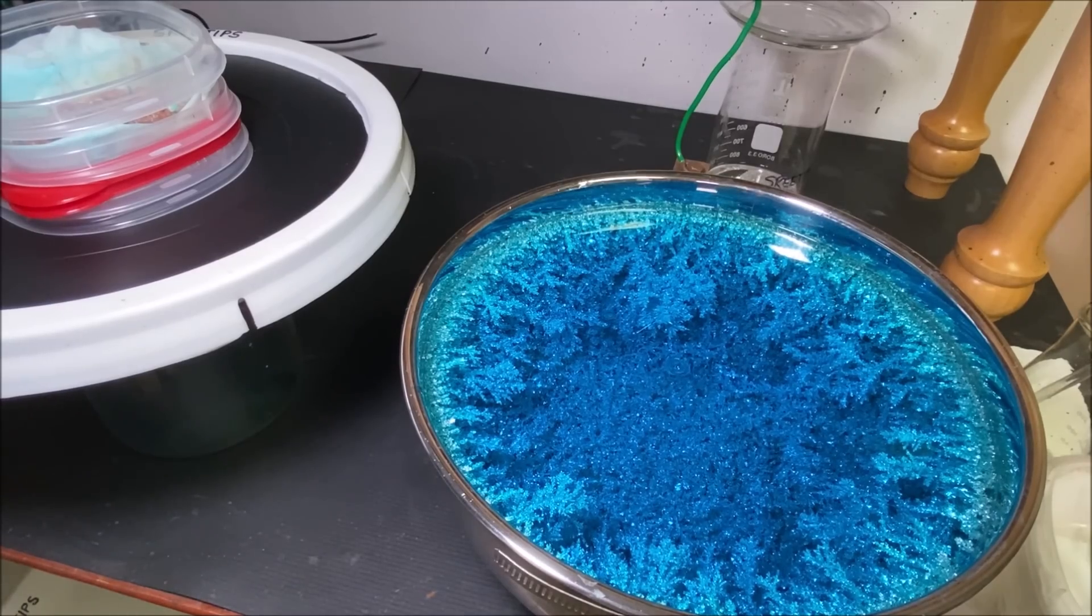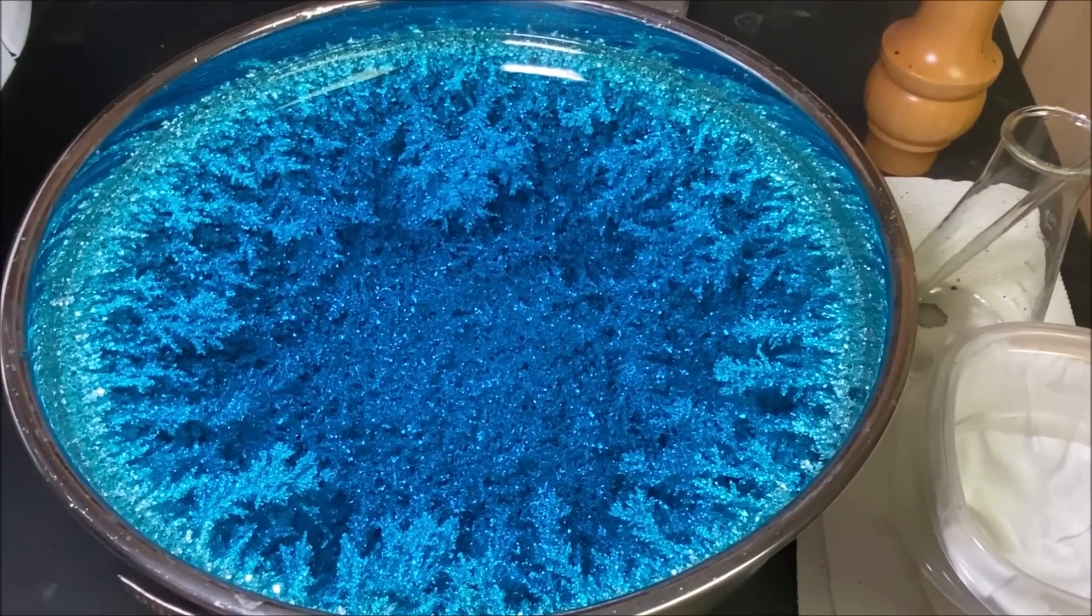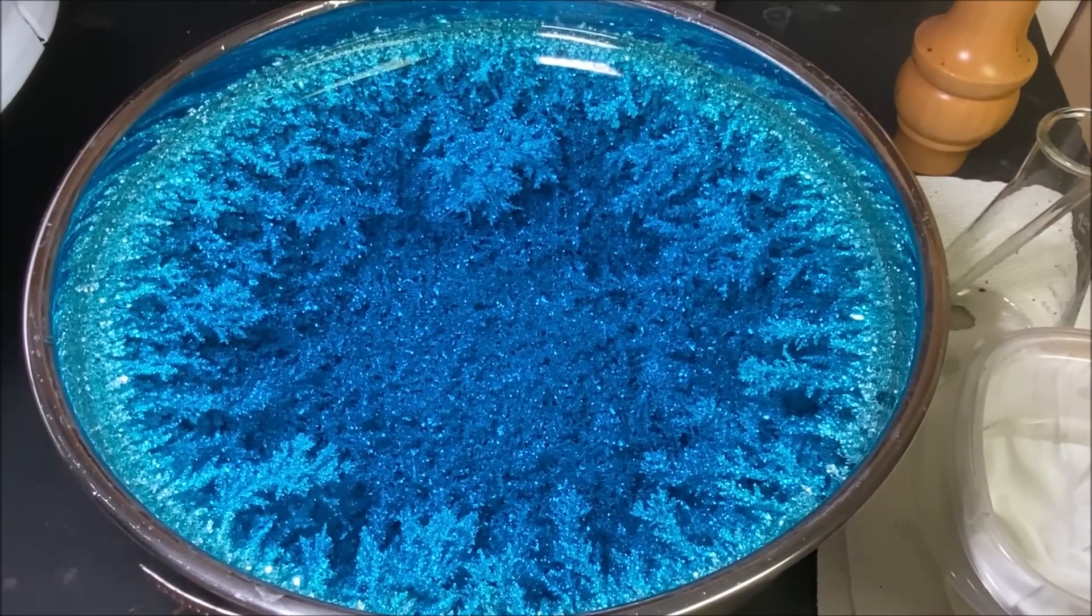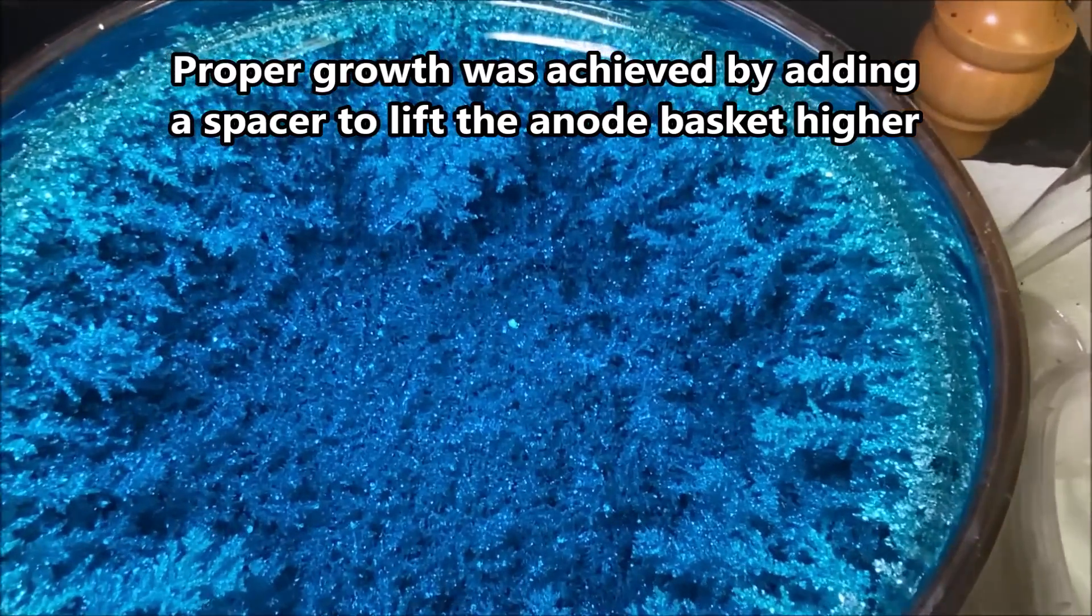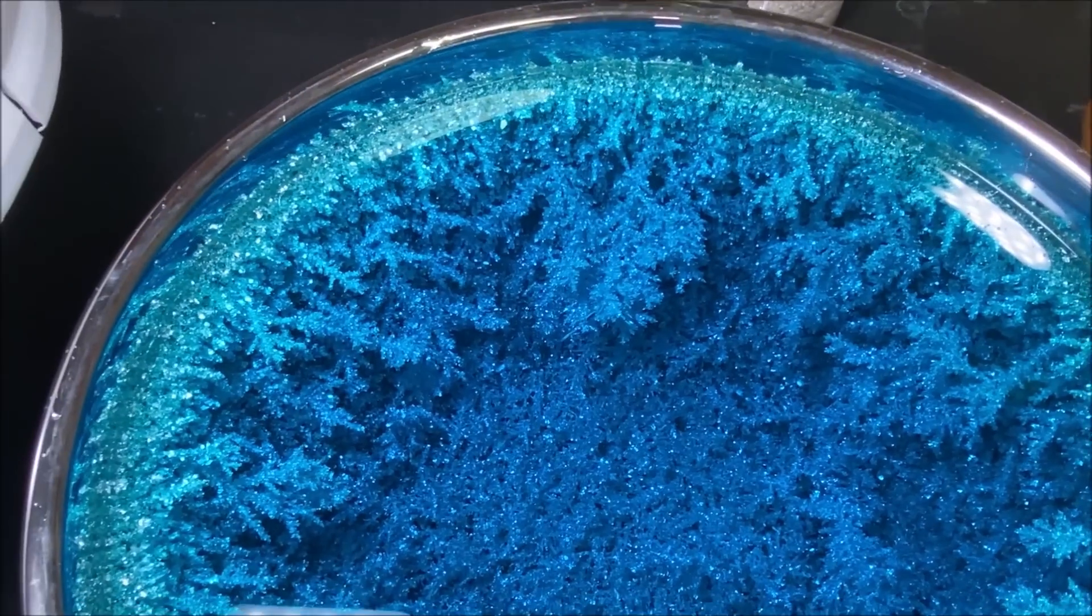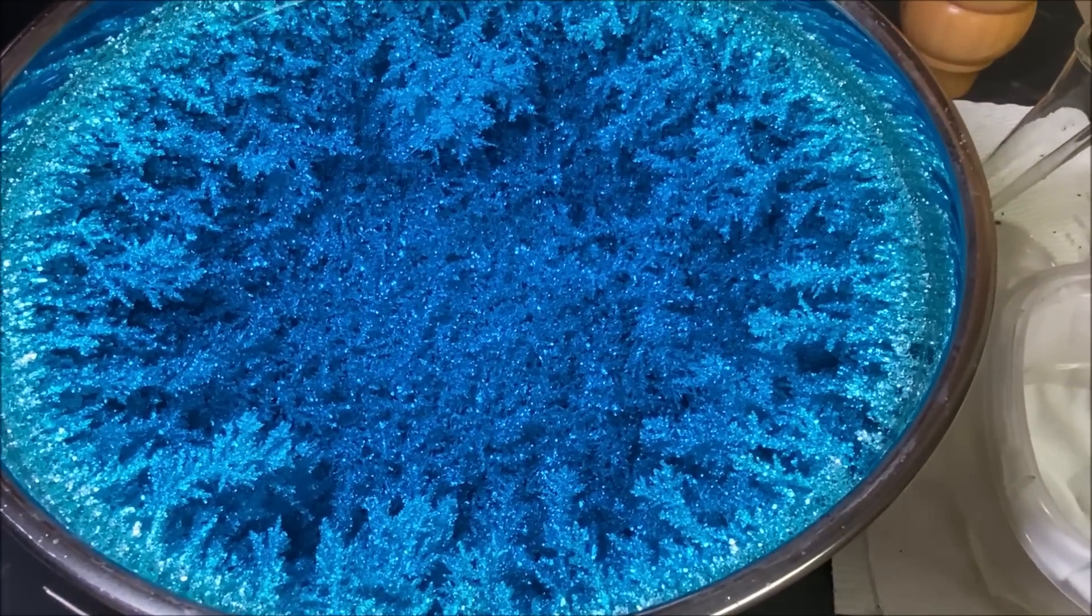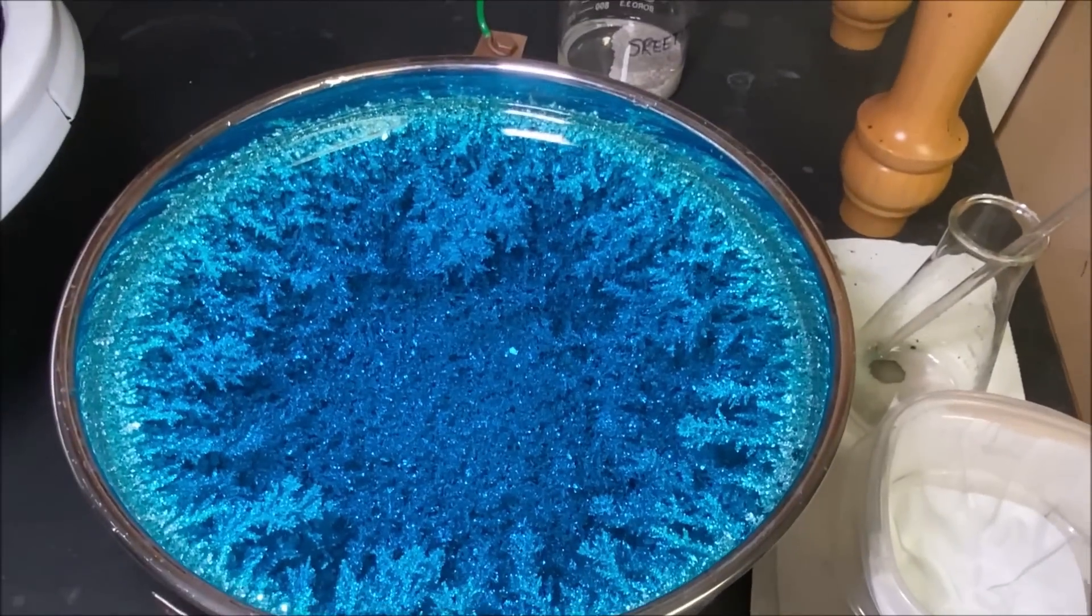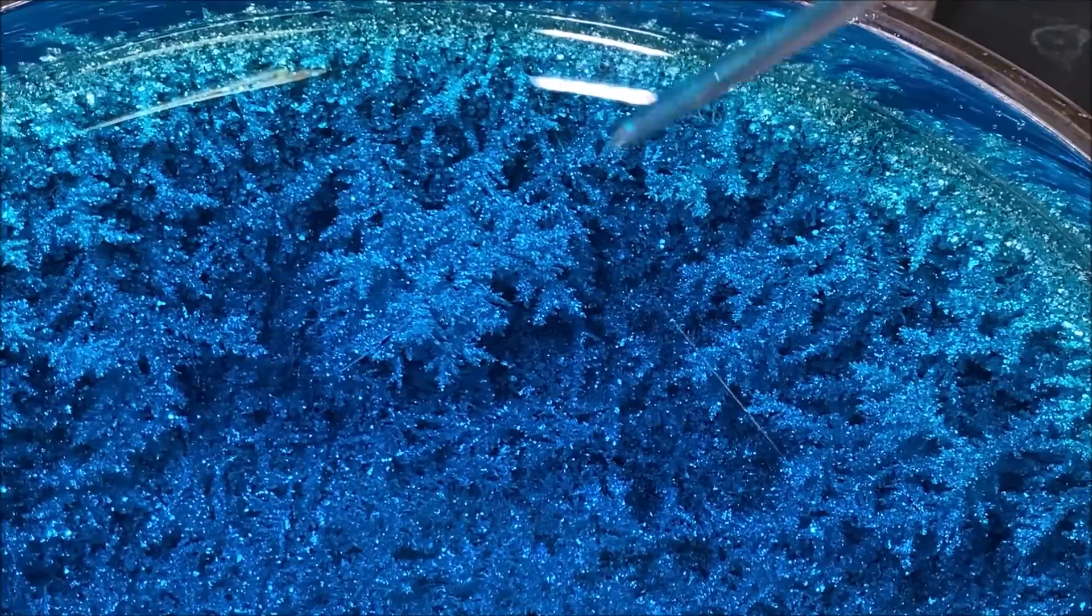Here's what we've got going on down inside of our electrolytic silver cell. Just look at that, man, that is beautiful pure silver. It's growing good out from the rim towards the center of the cell, just like we want it to.